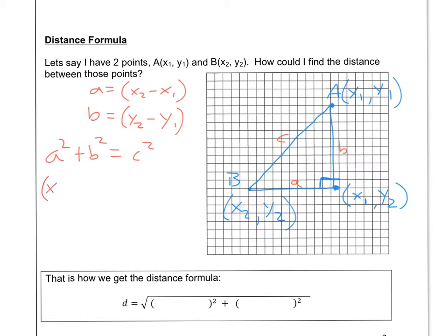We could replace this with x2 minus x1 squared. And we know what B is. We could replace that with y2 minus y1. And that whole thing equals C squared.